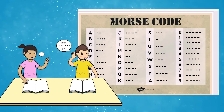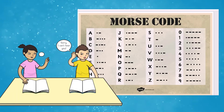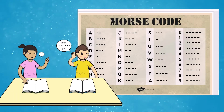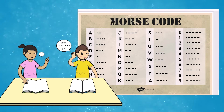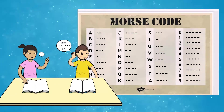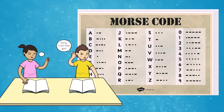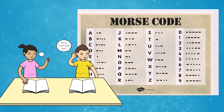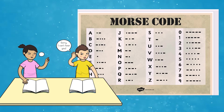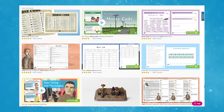Another lovely activity would be to use a Morse code map. Learners could write out and sound out their secret message to their partner or to the group.